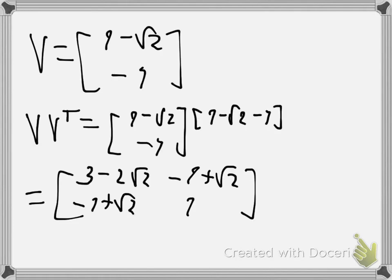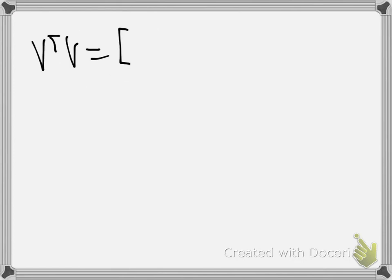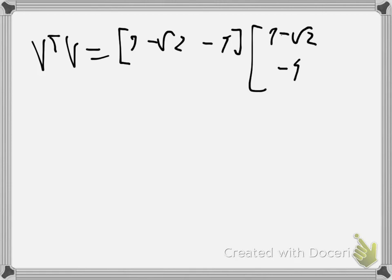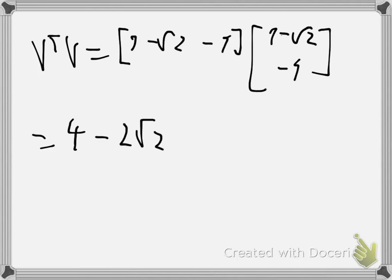Now we compute V-transpose V, which is essentially the magnitude squared of V, since V is not a unit vector. That gives us 4 - 2√2.